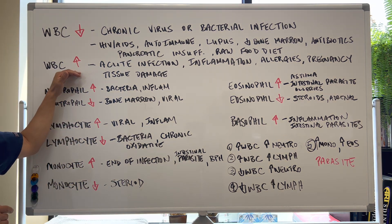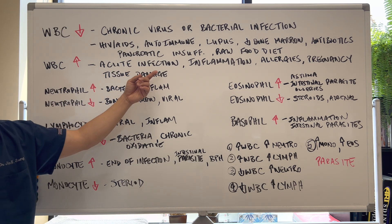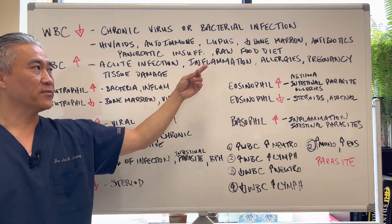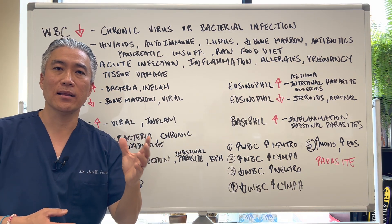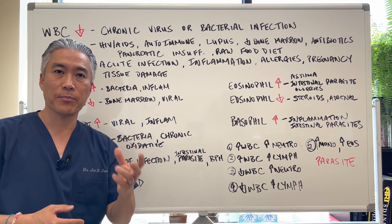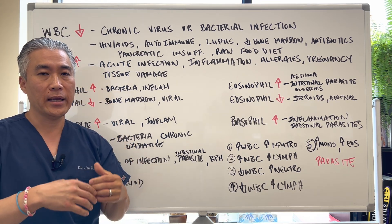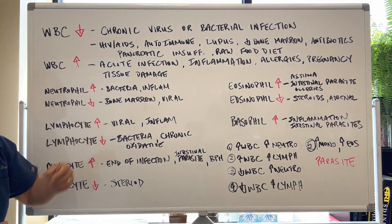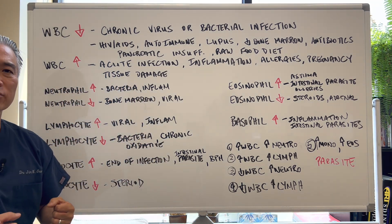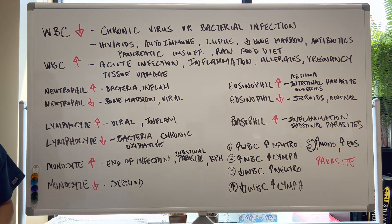When white blood cells increase above lab levels — even functional levels — it means acute infection, inflammation, or allergies. It can also occur in late-stage pregnancy or during childbirth; your white blood cell count can go up and will calm down after you give birth. Tissue damage, muscle tissue, or surgery can also cause an increase in white blood cell count.